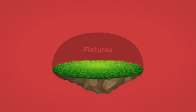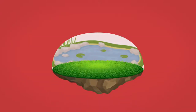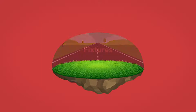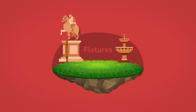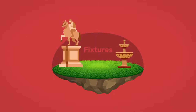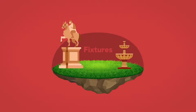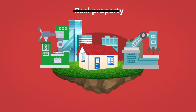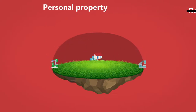Real property includes land and any fixtures to land, such as ponds, canals, and roads. It also includes formerly movable objects that may have been permanently affixed to the land, such as homes, other buildings, and machinery. Any property not considered real property is personal property.